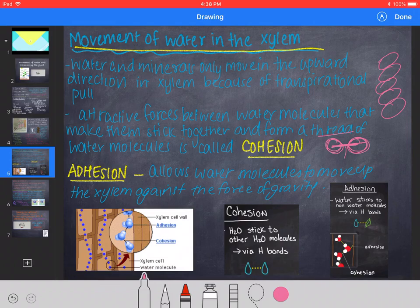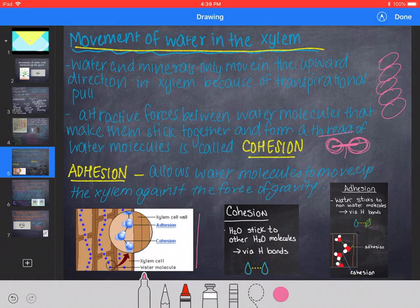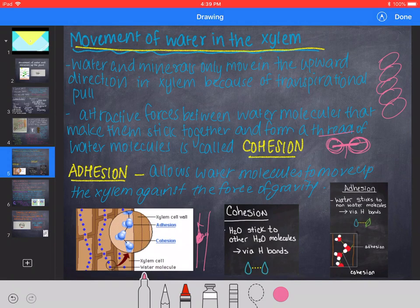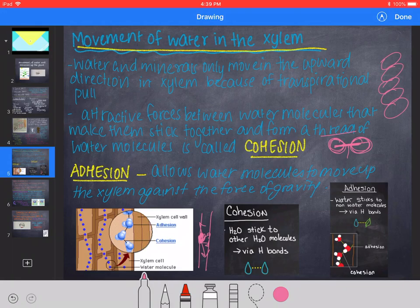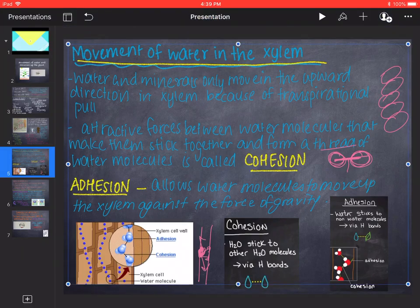Adhesion allows the water molecules to move up the xylem against the force of gravity. Cohesion is when water molecules stick to other water molecules and that forms a thread of water which moves up the xylem. Adhesion is when water molecules stick to non-water molecules. When water molecules try sticking to the xylem cell wall or the xylem ends, they allow it to move the water up the xylem. So adhesion is when water sticks onto non-water molecules and allows it to move up the xylem, thus transporting it.